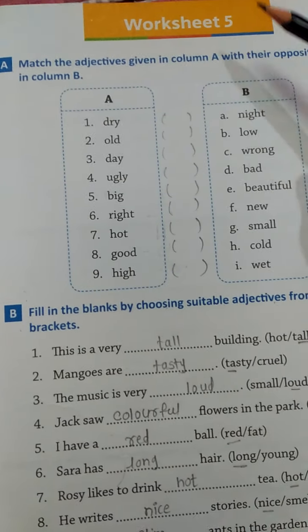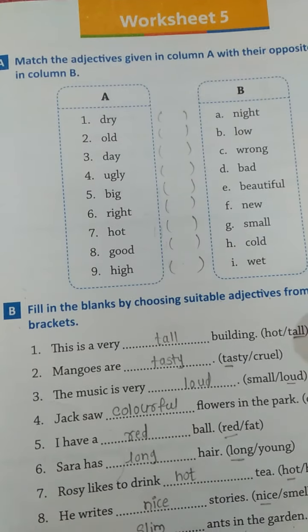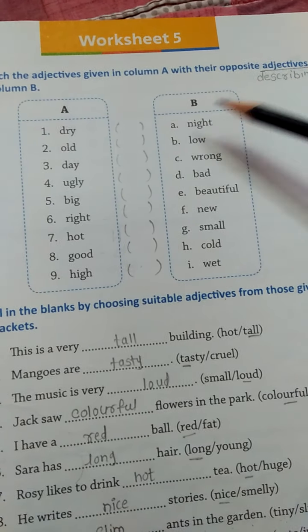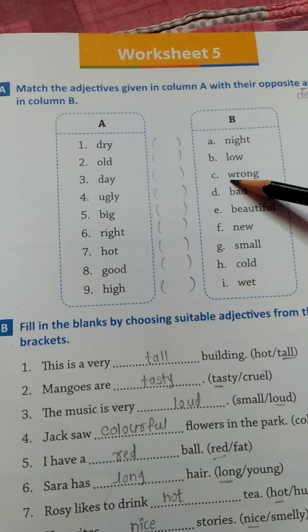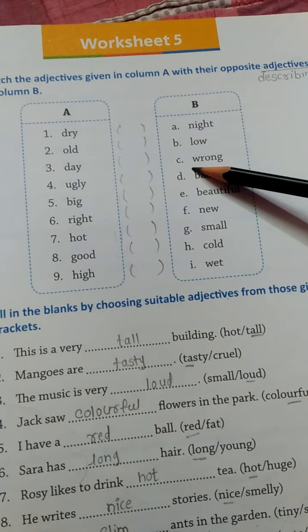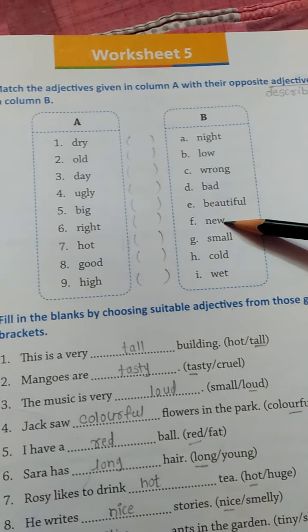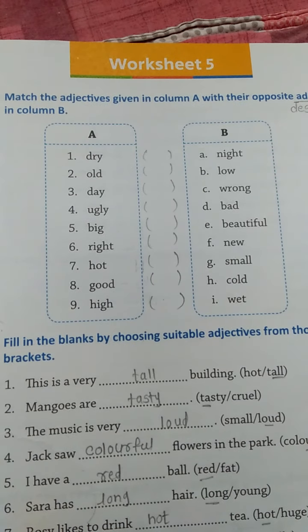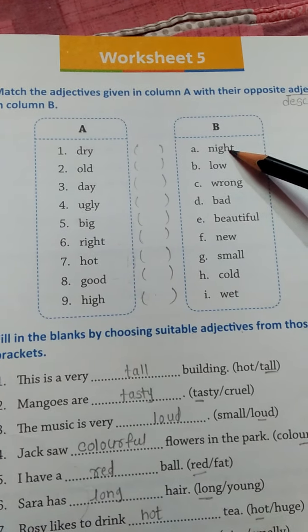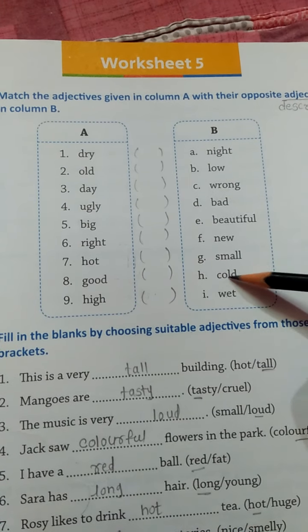Now next we see worksheet number 5. Match the adjectives given in column A with their opposites in column B. In column A there are some adjectives and in column B there are their opposites. Adjectives means describing words. In column B we see: night, low, wrong, bad, beautiful, new, small, cold, wet.